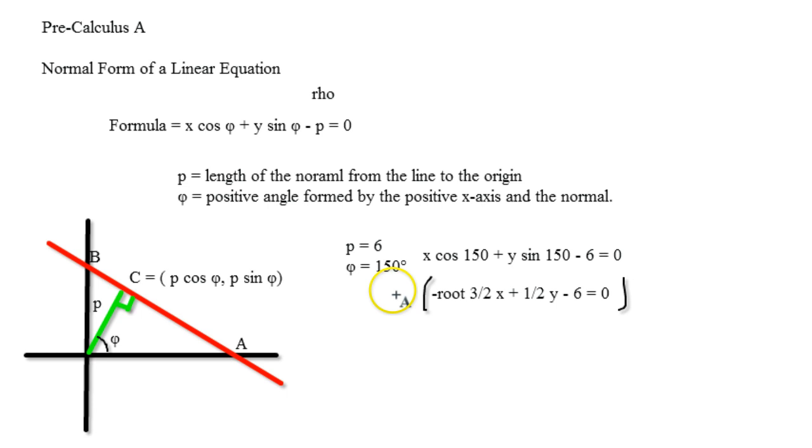Now, when I go to standard form, the reason why I need to multiply by negative 2 is because I do not want that first part to be positive. And so I distribute it, and so I should get root 3x minus y plus 12 equals 0, and that's my standard form of this actual equation.